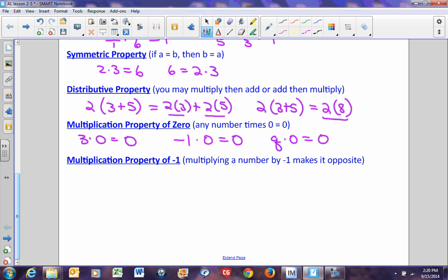The multiplication property of negative 1 says multiplying a number by negative 1 makes it its opposite. If I want to make something opposite, multiply it by negative 1. So if I have 3 and I multiply it by negative 1, it equals negative 3. These two numbers are opposites.